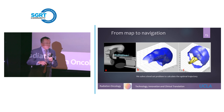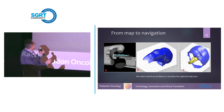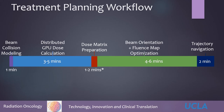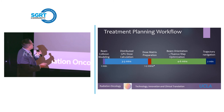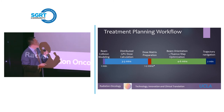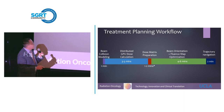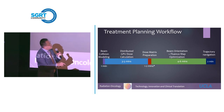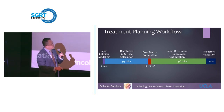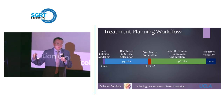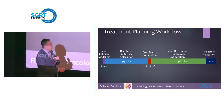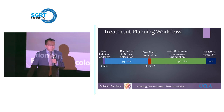This is what I envision for the future of SGRT-guided 4Pi treatment. We start with beam collision modeling, which takes about one minute. A distributed GPU dose calculation engine calculates the beamlet dose of all beams in three to five minutes, depending on tumor size. Then we prepare the dose matrix, perform beam orientation and fluence map optimization in four to six minutes, arriving at the beautiful dose distributions. Finally, we calculate the trajectory in about two minutes — a complete workflow of 10 to 15 minutes.